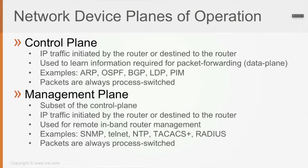The management plane, as the name states, is used for remote inbound device management. Examples include SNMP, Telnet, SSH, NTP, TACACS+, and RADIUS. Because these packets are destined to or initiated by the router in order to manage it, they are likewise always process-switched. All SNMP packets, Telnet packets, NTP, TACACS+, and RADIUS packets are going to hit the CPU and be processed by the CPU.